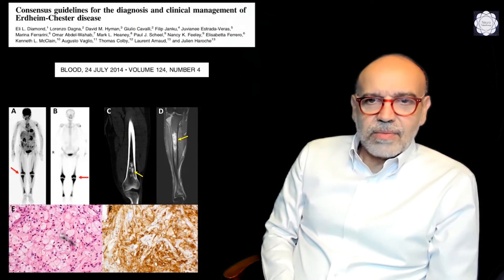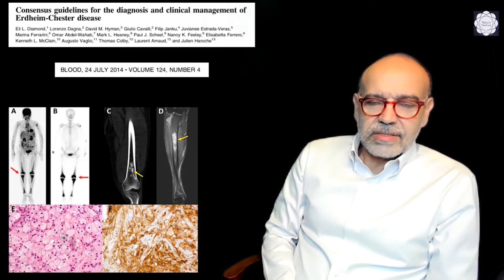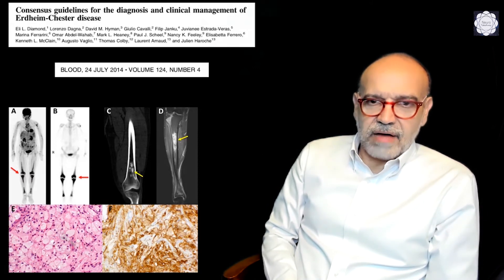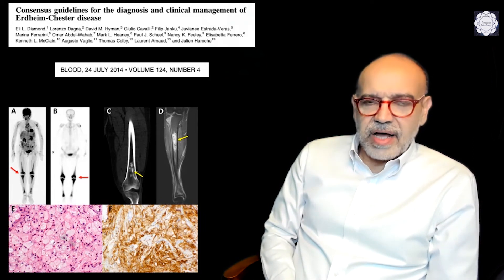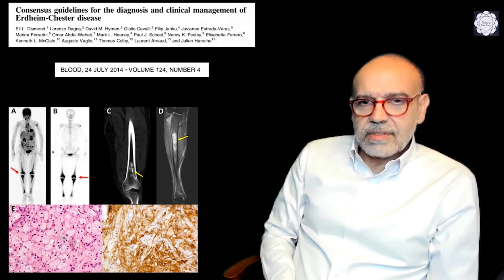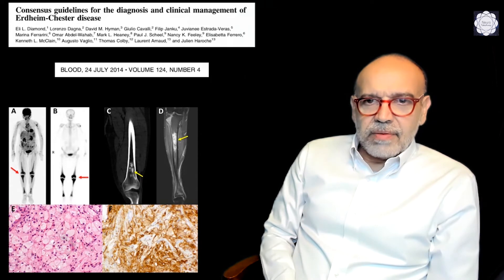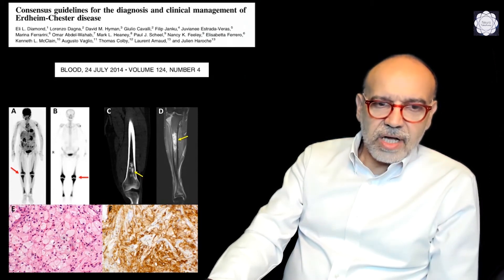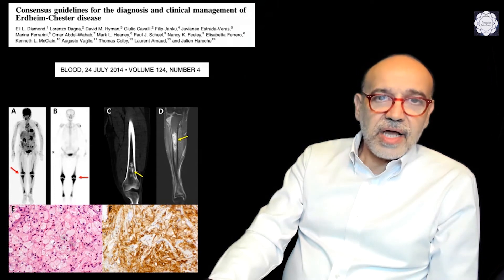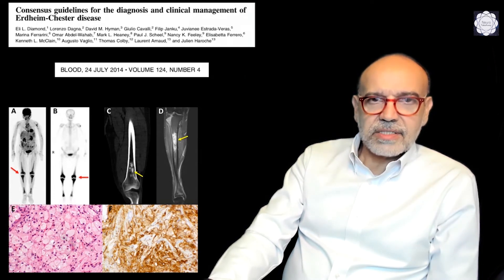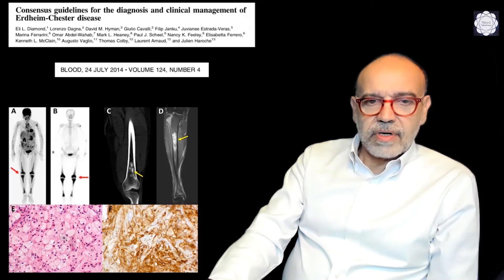Erdheim-Chester disease occurs more frequently in males around age 40 to 60 years old depending on the series. The most important thing is to obtain a biopsy for histopathological findings in the context of proper clinical and radiological findings. On H&E you can see the histiocytes full of lipids — the typical foamy histiocytes — and on immunohistochemistry they bind to CD68, the typical marker of these cells, and do not bind to markers of Langerhans cells.